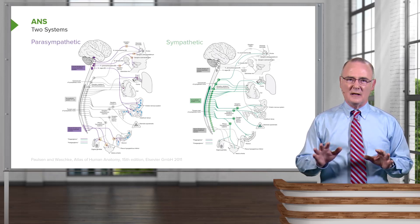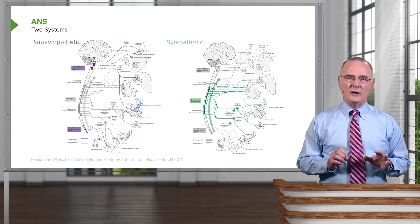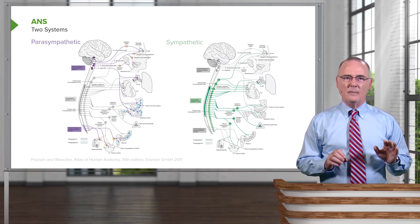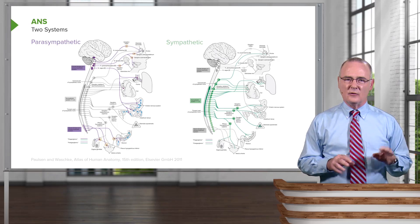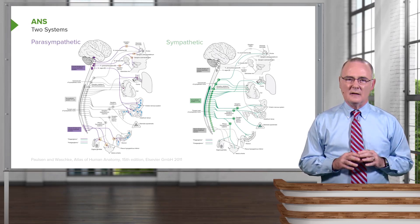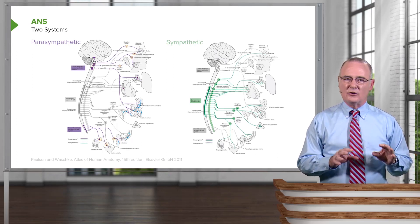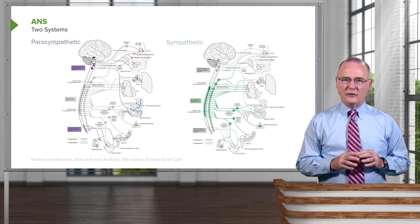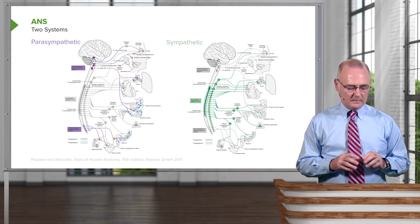These systems have functions that conflict with one another or have opposite functions. Sympathetics tend to be very stimulatory, and the parasympathetics tend to decrease activity for nourishment and rest, for example.